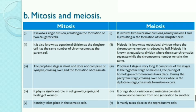In mitosis, the prophase stage is short and does not comprise synapsis, crossing over, or formation of chiasmata. In prophase 1 of meiosis, it is very long and comprises five stages. In the zygotene stage, pairing of homologous chromosomes takes place; during pachytene, crossing over occurs; during diplotene, chiasmata formation occurs. Mitosis plays a significant role in cell growth, repair, and healing of wounds.